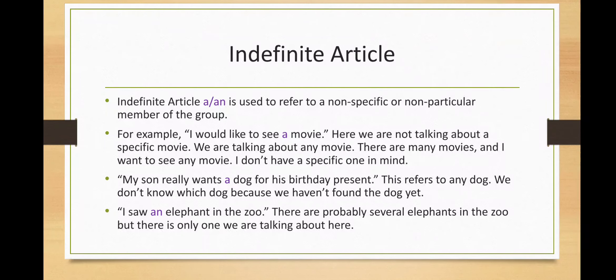Indefinite article. Indefinite article a or an is used to refer to a non-specific or non-particular member of the group. For example, I would like to see a movie. Here we are not talking about a specific movie. We are talking about any movie. There are many movies and I want to see any movie. I don't have a specific one in mind.